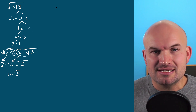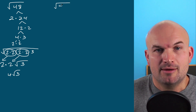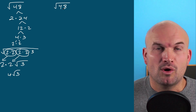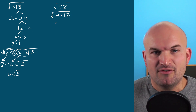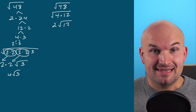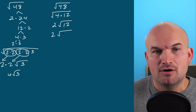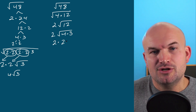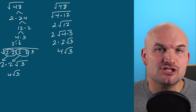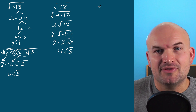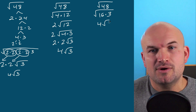Another related mistake is dividing by any square number that works instead of the largest one. Students see that 48 is divisible by 4, so they write the square root of 4 times 12 — getting 2 times the square root of 12. They either leave it unsimplified or have to simplify the square root of 12 again as 4 times 3, giving 2 times 2 times the square root of 3, which is again 4 times the square root of 3. The way around this is to find the largest square number that divides evenly into your radicand. Here that's 16, so you rewrite as the square root of 16 times 3 — which is 4 times the square root of 3, done in one step.